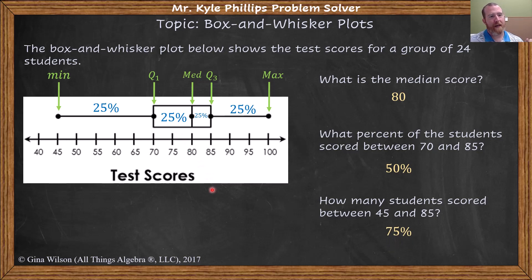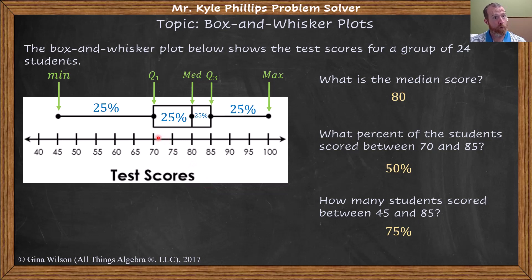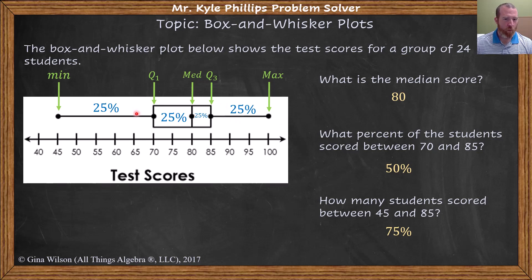We really like box and whisker plots when talking about data analysis because they're always cutting our data into fourths — hence the term 'quartile,' meaning four. Reading box and whisker plots is very easy. They're always going to be sectioned into fourths, and interpreting the data is just as simple as adding up our percentages.